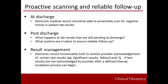Many electronic medical records have result management functionality which is built to receive and document provider acknowledgement of certain test results. Consider a situation where a result was electronically sent to the wrong provider who did not acknowledge the result within the defined limit. If the test results are not acknowledged by the provider after a predetermined interval, an escalation process to ensure result delivery and acknowledgement can begin. With a system like this, laboratories may benefit by eliminating the current necessity to call all yellow alerts by choosing to track and document non-urgent results with their result management feature.